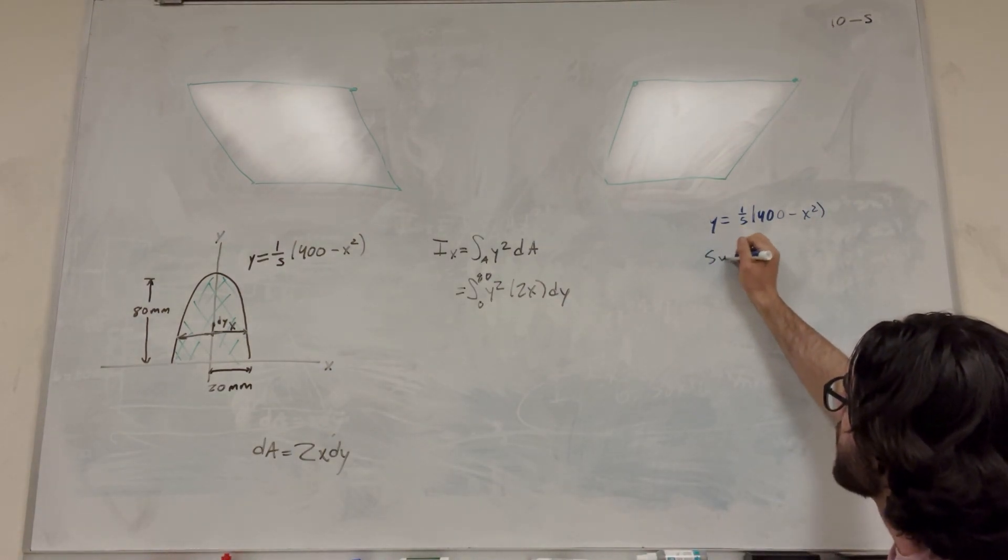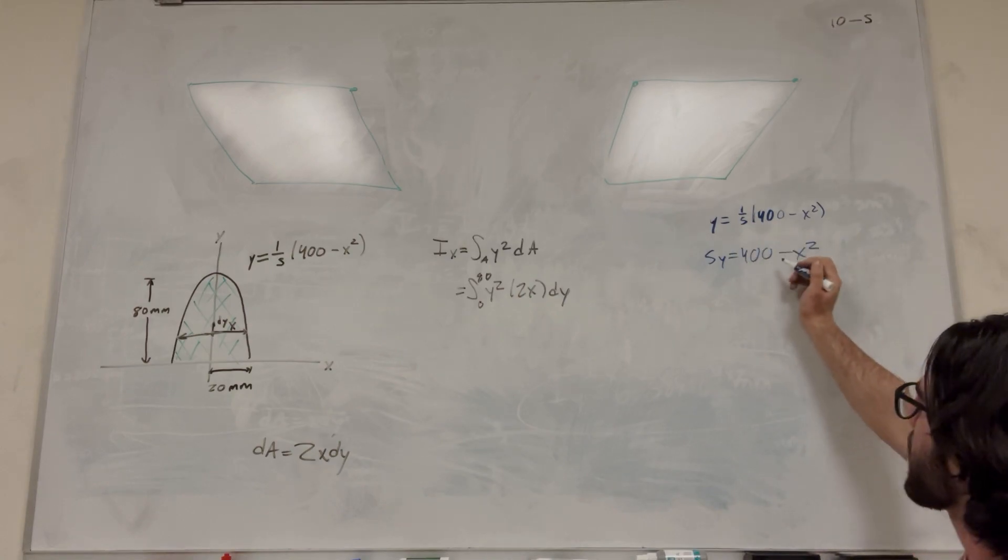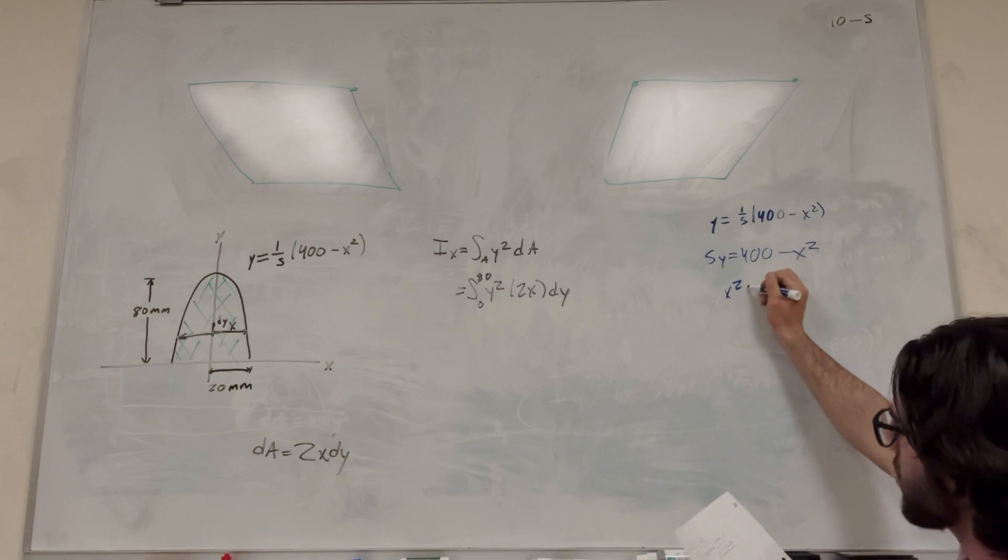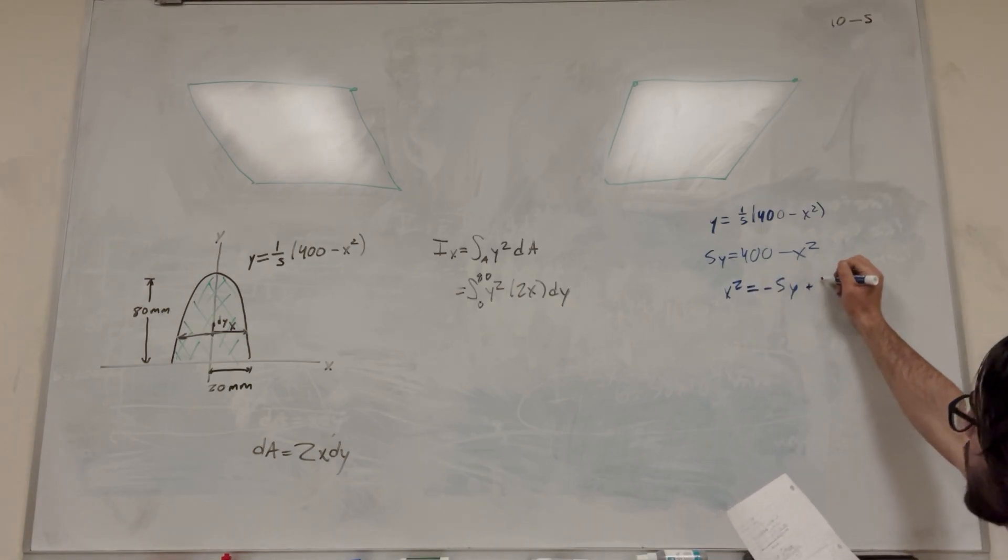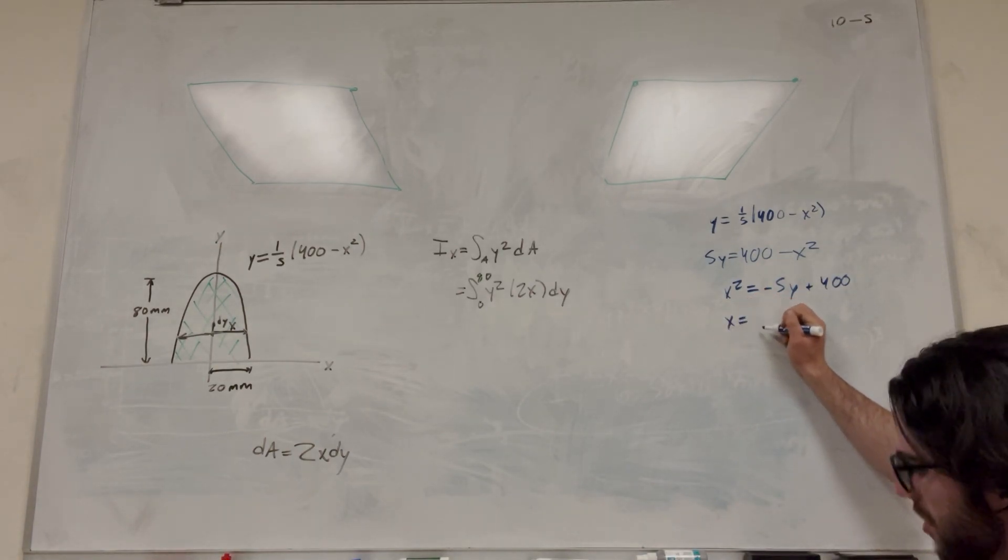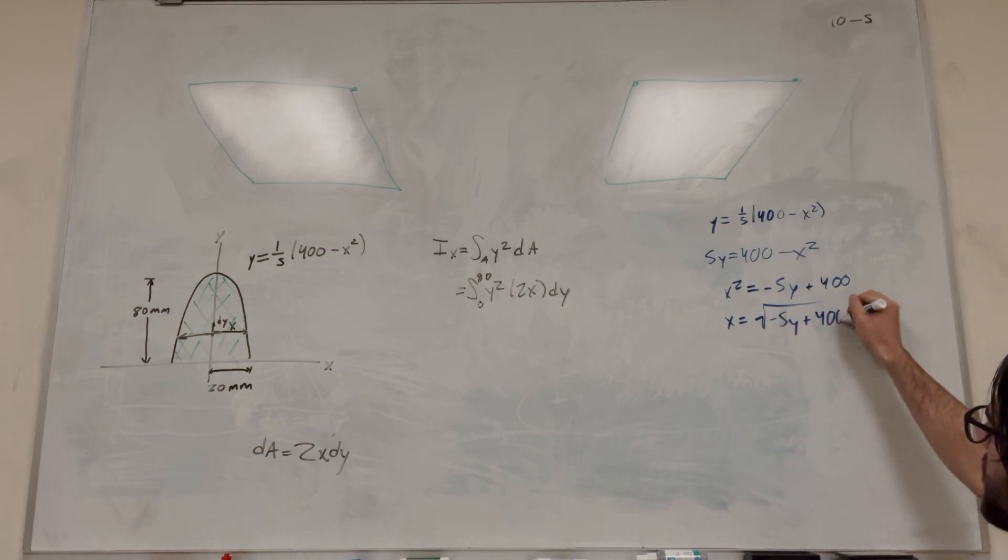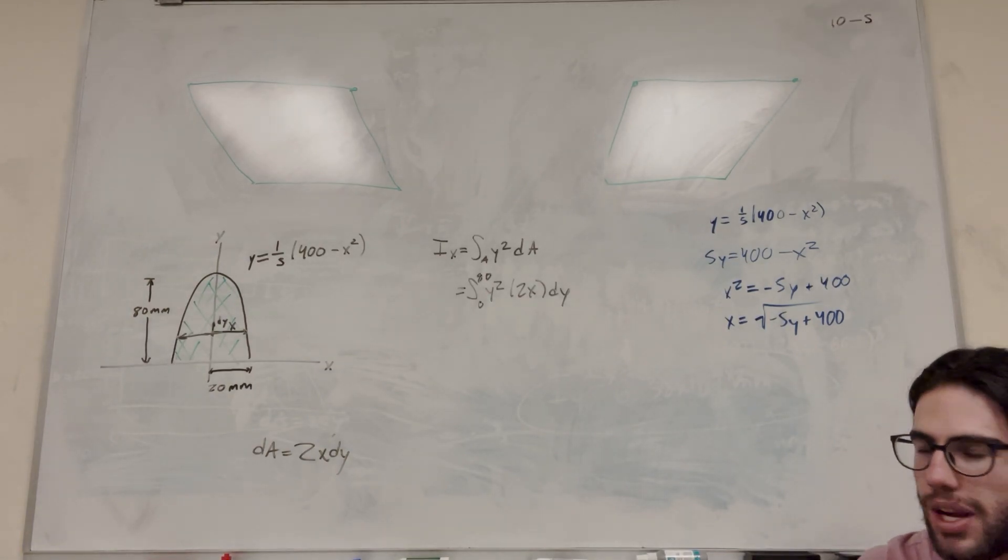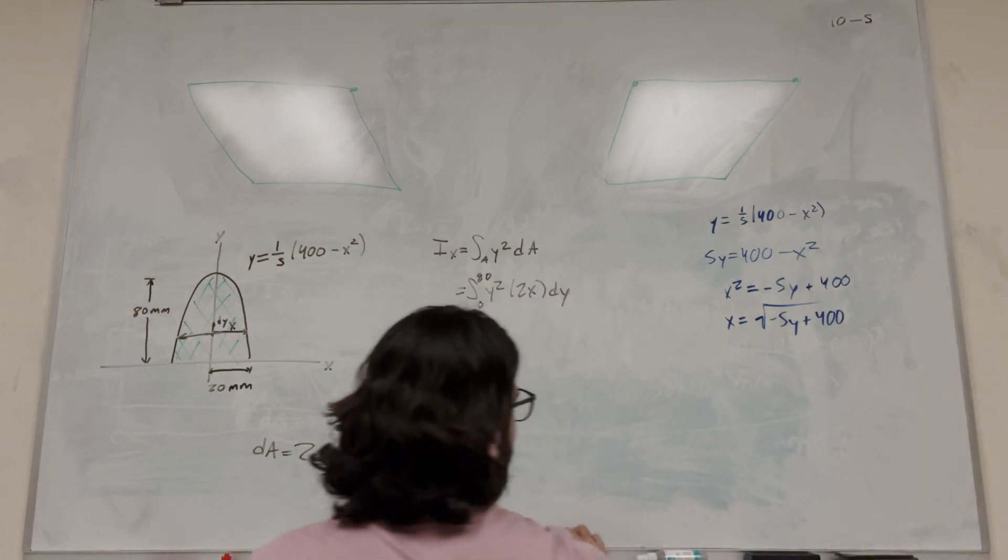So let's multiply the 5 over to get 5y equals 400 minus x squared. And then we're going to keep the x squared by itself. So x squared is going to become negative 5y plus 400. So then we're going to take the square root of this and get x equals the square root of negative 5y plus 400. So technically this would be plus or minus, but we kind of accounted for that when we added this 2. So we don't need to worry about that in this case. But yeah, just make sure you keep your math correct.